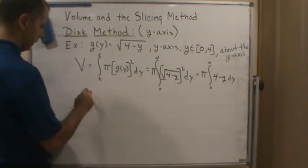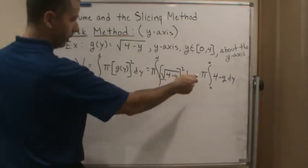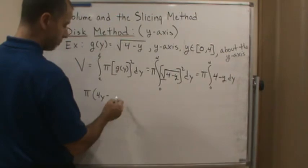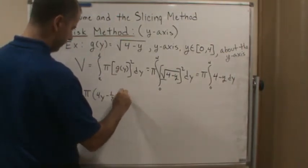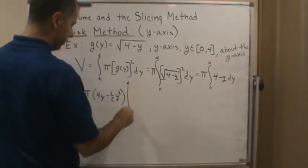And now integrate. So we get pi and we're going to get 4y minus 1 half y squared evaluated from 0 to 4.